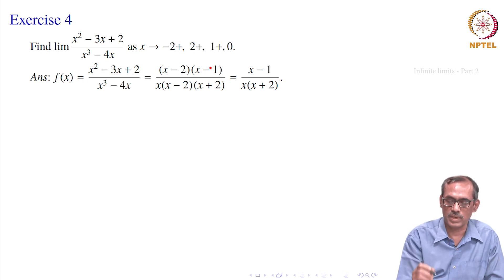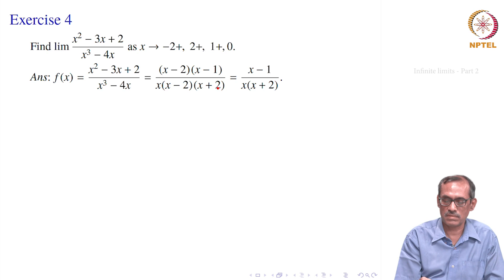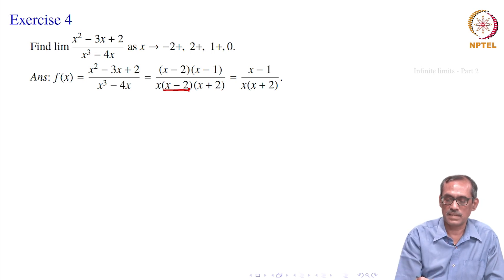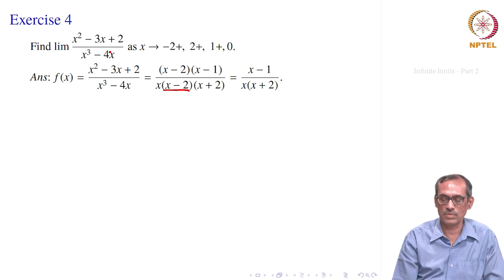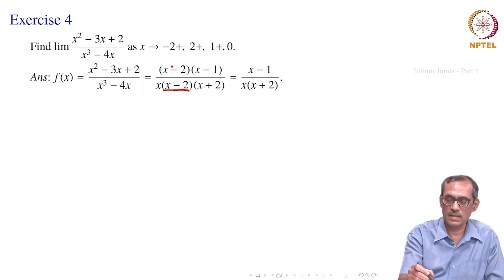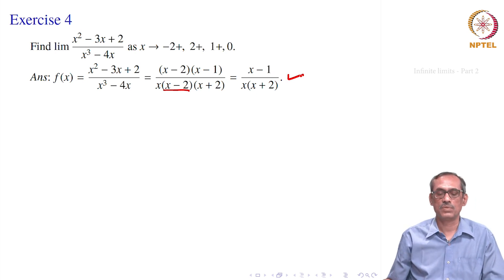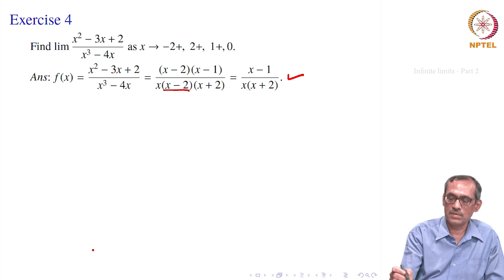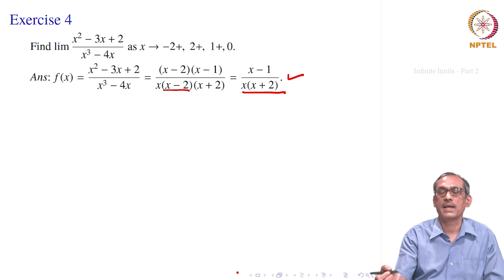The simplified function is f(x) = (x-1)/[x(x+2)]. The function is not defined at x = -2, x = 0, and x = 2 (from the original). At all other points it is well defined. The domain excludes these three points: 0, -2, and 2.